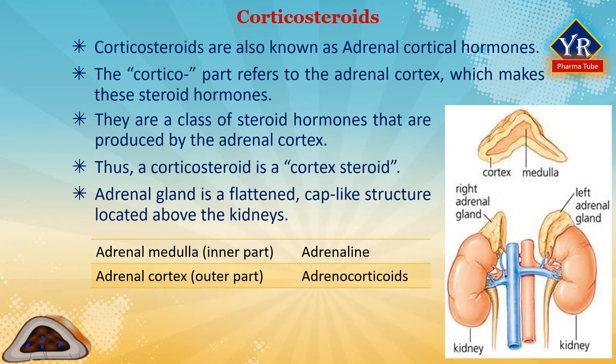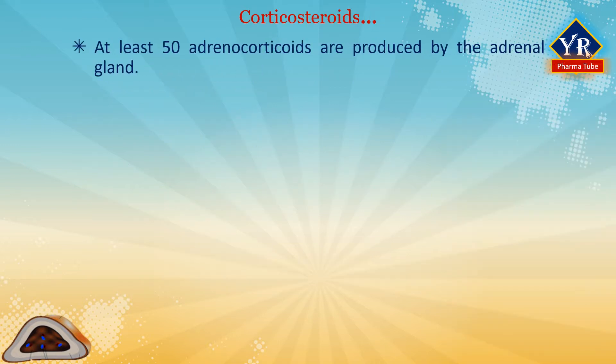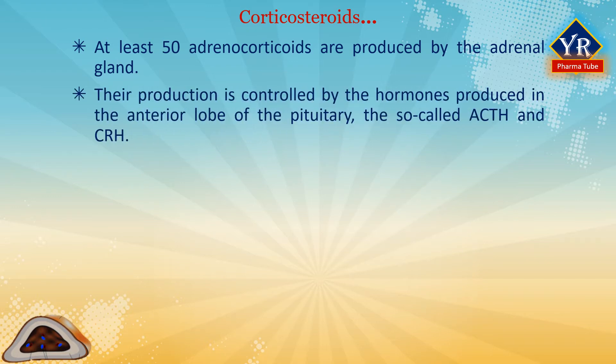The adrenal gland is divided into medulla, the inner part, and cortex, the outer part. The inner core, or medulla, produces adrenaline, and the outer cortex produces the steroid hormones. At least 50 adrenocortical hormones are produced by the adrenal gland. The production of these adrenocortical hormones is controlled by the hormone produced in the anterior lobe of the pituitary — the adrenocorticotropic hormone (ACTH) or corticotropin-releasing hormone (CRH).